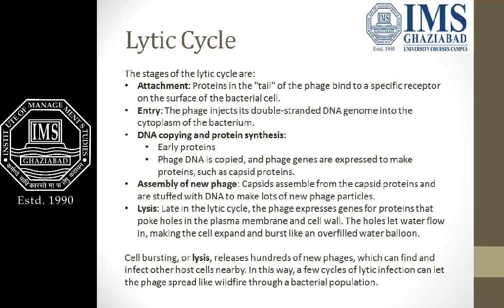After forming all the particles, the assembly process begins. All the capsid particles arrange and form an icosahedral structure, or head structure. First the capsid is formed, and after that genetic material is injected into the capsid. After assembly of the virus particle, comes the last step — lysis or release. During the lytic cycle, in the late phase, late proteins express certain genes for proteins which bore a hole in the plasma membrane and the cell wall. This hole lets water flow into the cell, making it expand and burst like an overfilled water balloon.